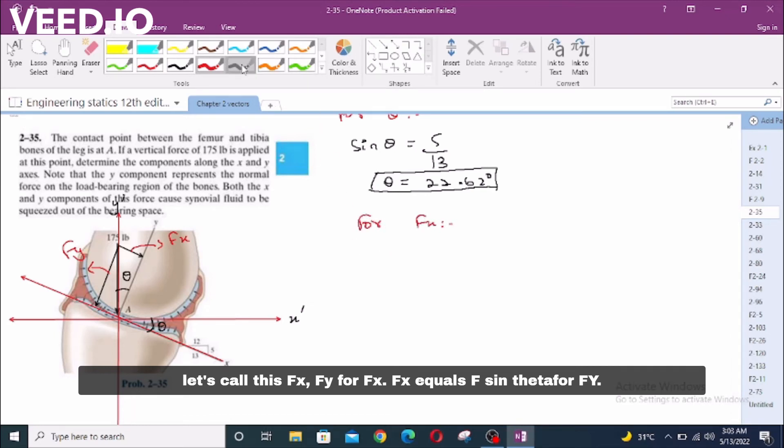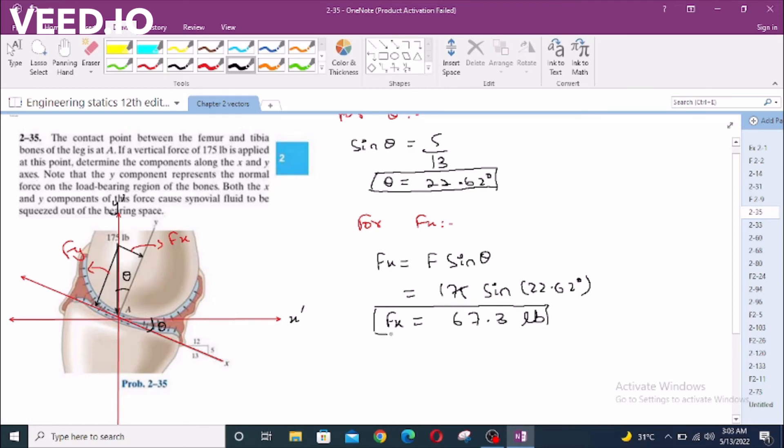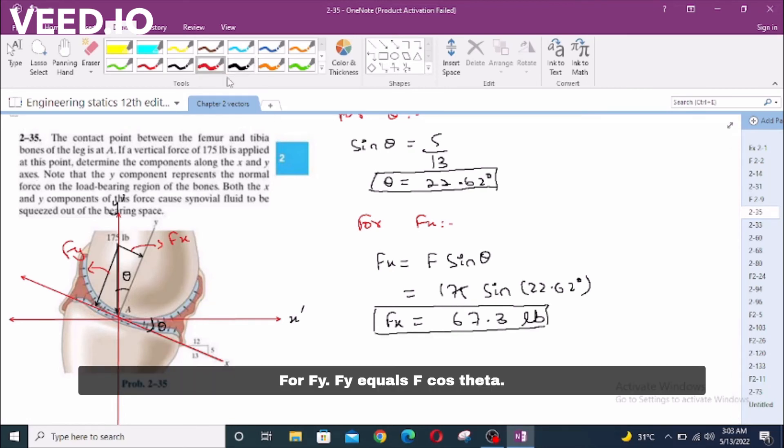Fx equals F sin Theta. F equals 175 LB times sin 22.62 degrees. Fx equals 67.3 LB.